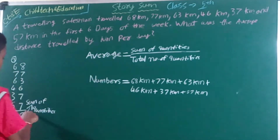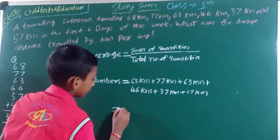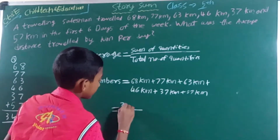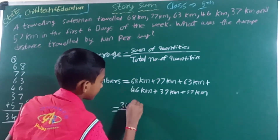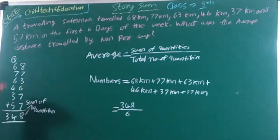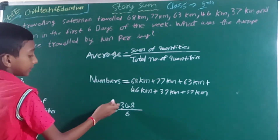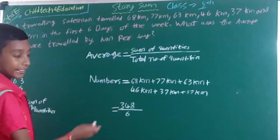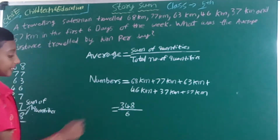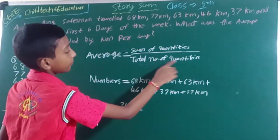This is the sum of quantities. Then 348 divided by 6, because there are 6 numbers: 1, 2, 3, 4, 5, 6. So 348 is divided by 6, and 6 is the total number of quantities.